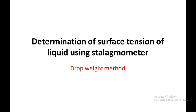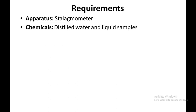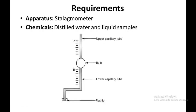In the drop weight technique, the weight of a fixed volume of the liquid under test and the reference liquid is taken, and by comparing these two different weights the surface tension of the sample is calculated. The stalagmometer is a calibrated pipette having a capillary above and below the bulb, containing a central hollow bulb, and the upper and lower capillary tubes have a calibrated scale.